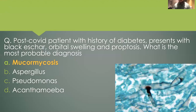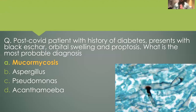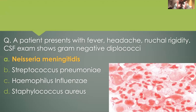Aspergillus has septate hyphae — septate means there are demarcations — and the branching of Aspergillus is at 45 degrees. Mucormycosis, on the other hand, has ribbon-like hyphae and they branch at obtuse angles or right angles. They are described as ribbon-like hyphae, and that was the appearance that was given in the image.